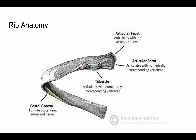Now for the anatomy of an individual rib: we have superior and inferior articulating facets — I prefer to call these demi-facets, because that's what they are; they're flatter facets. They articulate with the inferior and superior articulating facets of the vertebrae. There's also a facet that articulates with the transverse process of the vertebra, and we have our costal groove here.